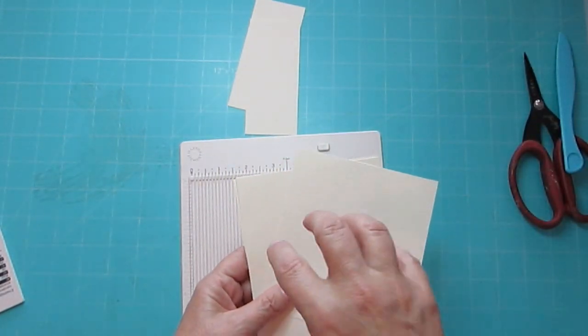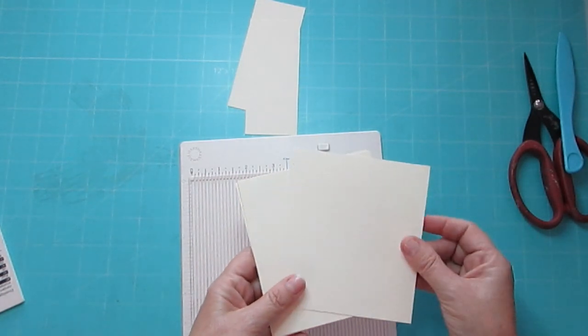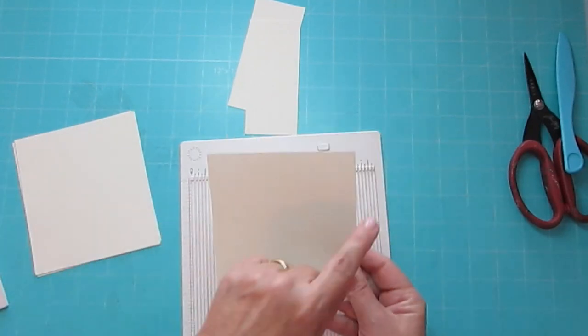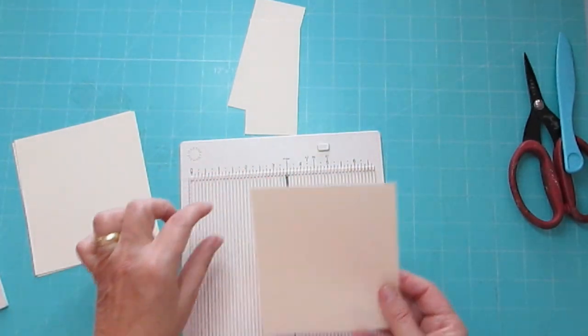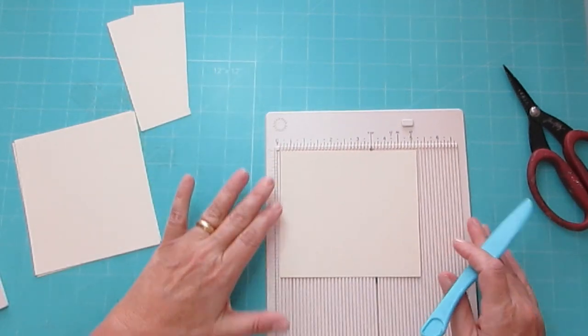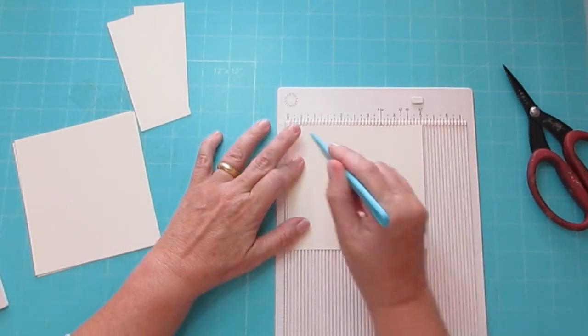The finished product is going to be four and a half by four and a half inches, so I've cut them four and a half by five inches in order to give that half-inch flap for the waterfall.